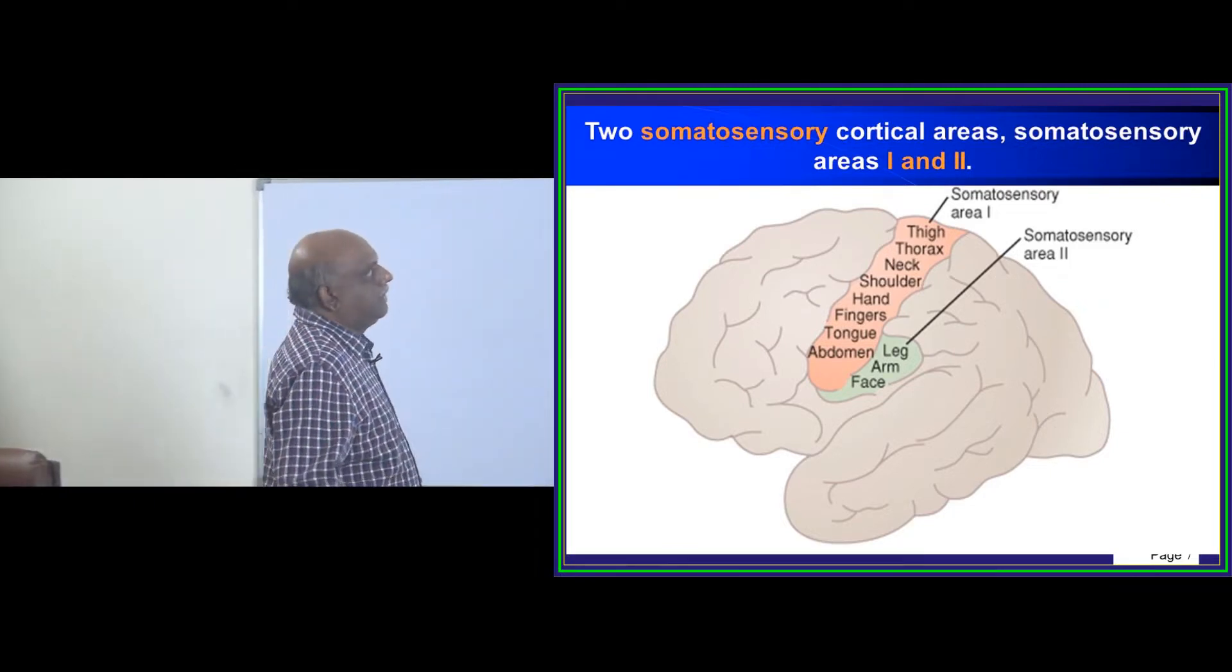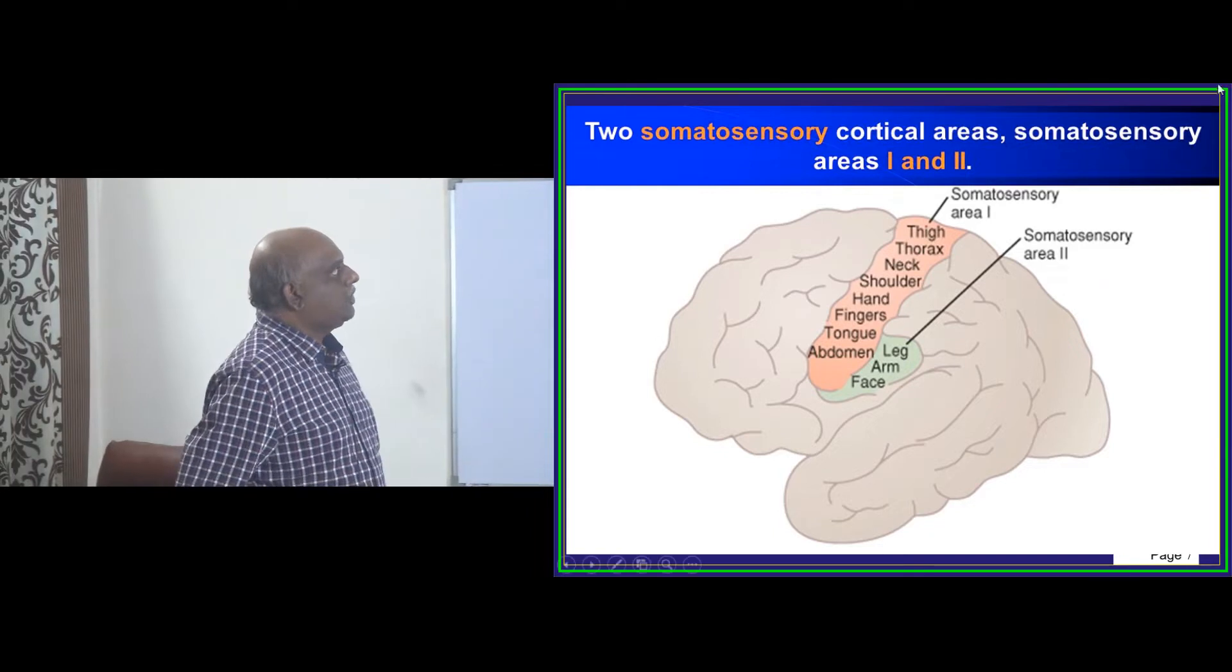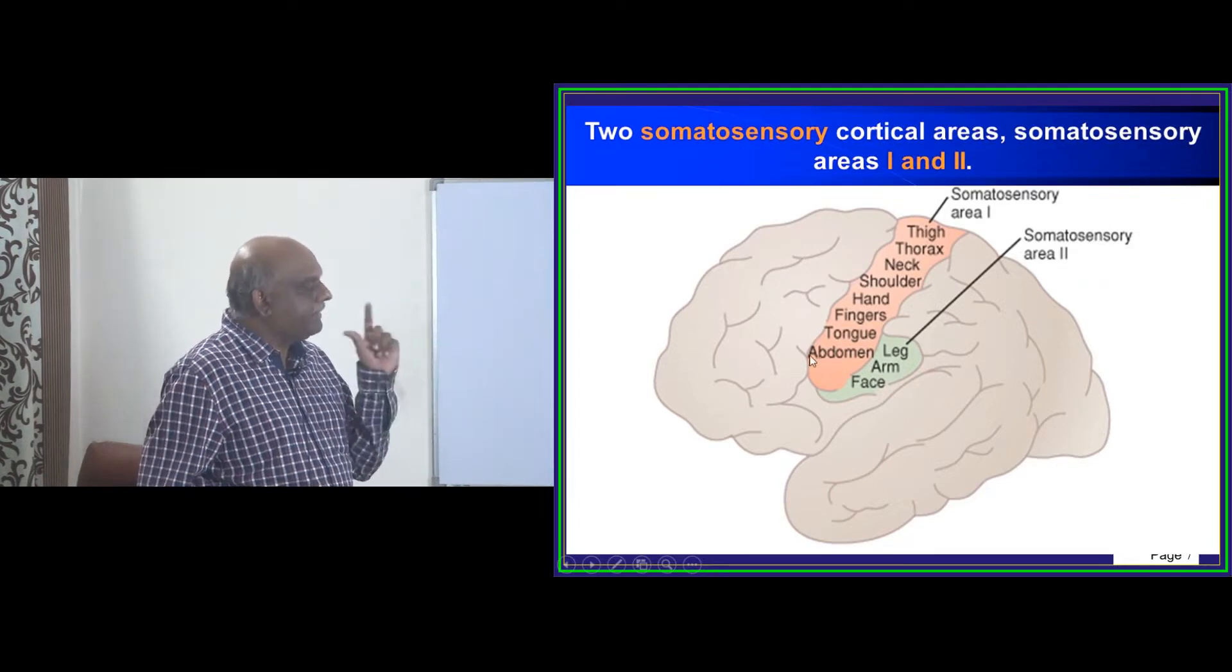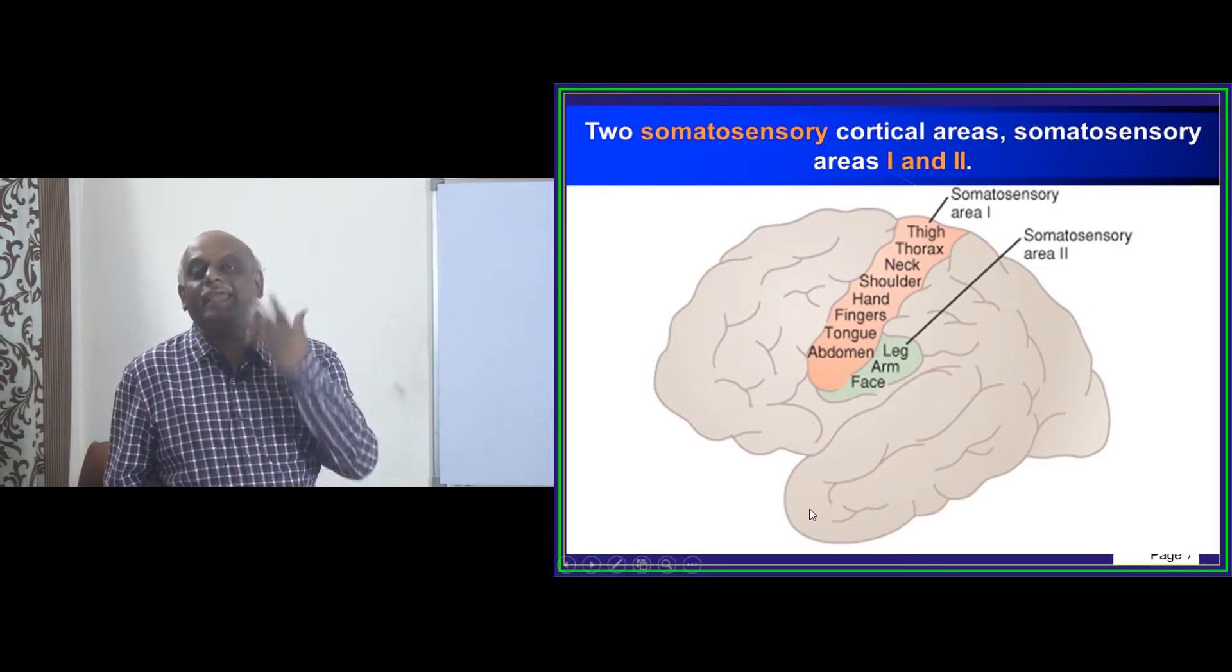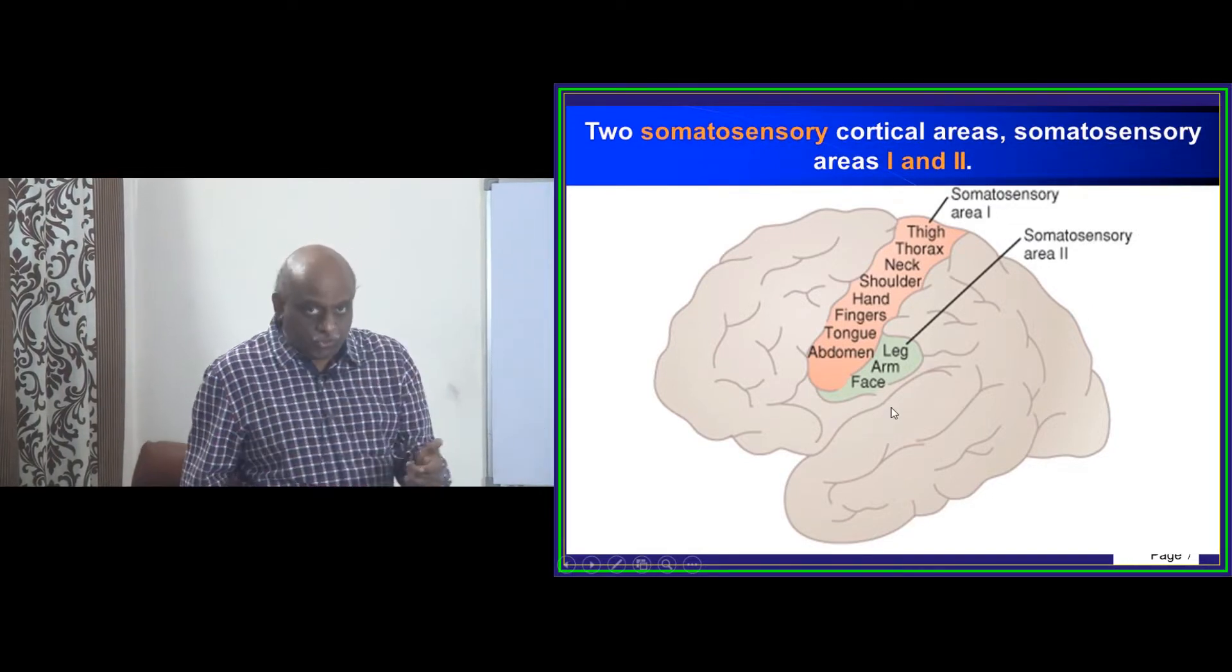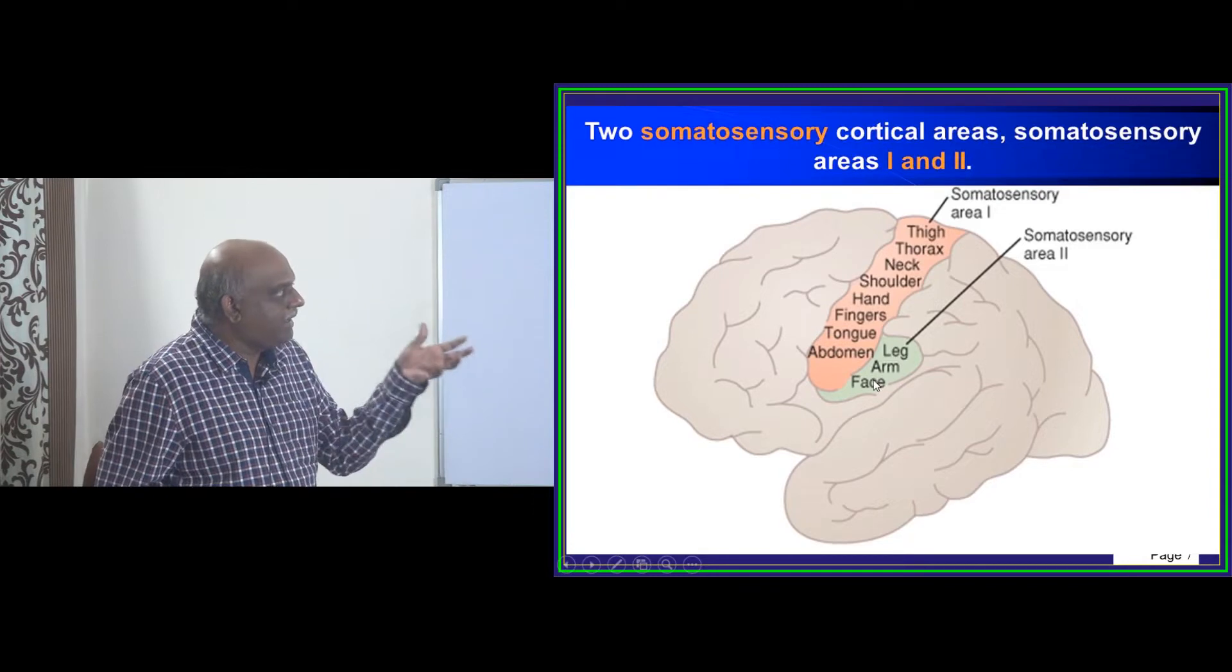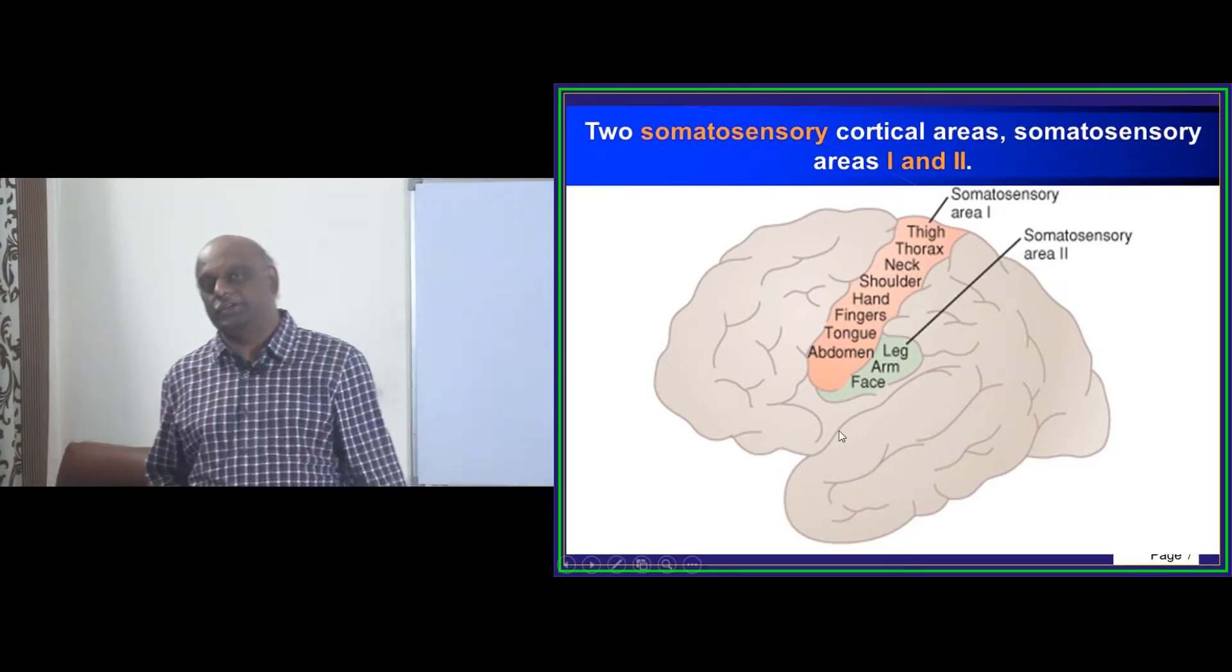Now, there are two somatosensory areas. Somatosensory area 1, where thigh, thorax, neck, shoulder, hand, fingers, tongue, abdomen, they are all carried by somatosensory area 1. So somatosensory area 2 is the one which is carrying the sensory information of the leg, arm, and face. This is what you have to be 100% sure about.